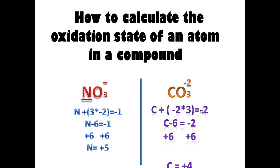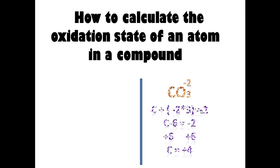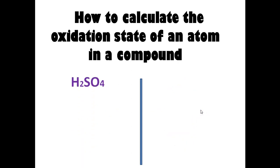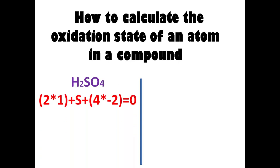Let's take another example — sulfuric acid. Sulfuric acid has a sulfur inside, and sulfur is the atom with an unknown oxidation state. The overall charge of this compound is equal to zero because there are no signs above, so we put zero.